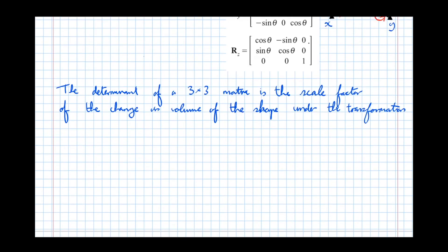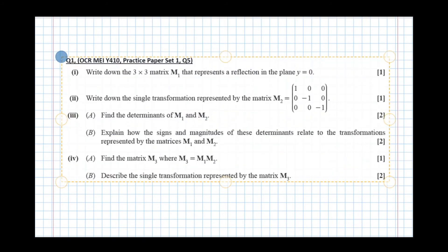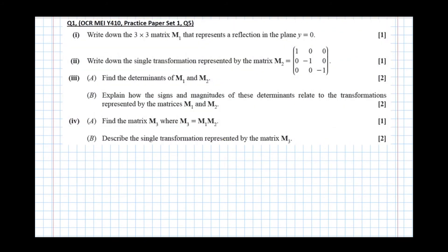Now let's attempt an exam question. Part 1: write down the 3×3 matrix M1 that represents a reflection in the plane Y equals 0. A reflection in Y equals 0 makes all Y coordinates negative. So the X coordinates stay the same (identity column), the Y coordinates are made negative, and the Z coordinates stay the same. That's the matrix M1 for reflection in the plane Y equals 0.